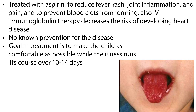Kawasaki disease is treated with aspirin to reduce fever, rash, joint inflammation and pain, and to prevent blood clots from forming. IV immunoglobulin therapy decreases the risk of developing heart disease. Parents should be reassured that there is no known prevention for the disease and there is nothing they could have done to prevent it. The goal in treatment is to make the child as comfortable as possible while the illness runs its course over 10 to 14 days.